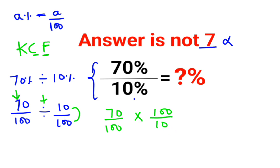Now if you see, a lot of things are cancelling. The 100 and 100 cancel, and these zeros cancel. So the answer comes out to be 7.